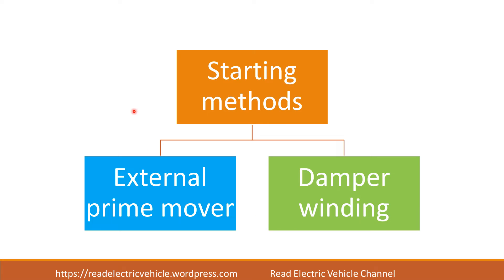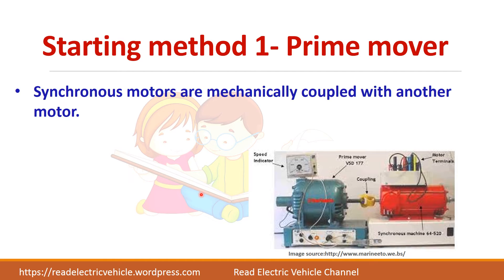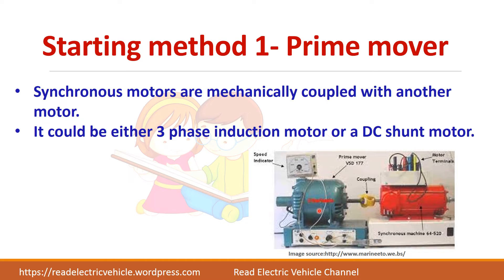There are different starting methods. One is using an external prime mover and another one is using damper winding. When using a prime mover — which is what we normally see in the lab — another machine is coupled to it and using that we start the synchronous machine. It could be either a three-phase induction motor or a DC shunt motor.